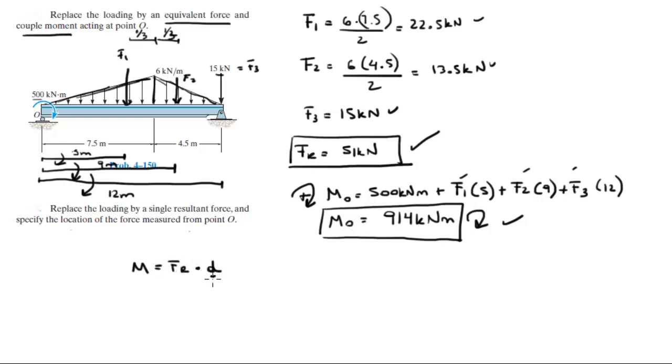That's easy to find because all you have to do is the moment equals the resultant force times the distance d. The moment we have is 914, the resultant force we have is 51. Solve for d and you get that d is equal to 17.92 meters to the right of O because the moment is clockwise.